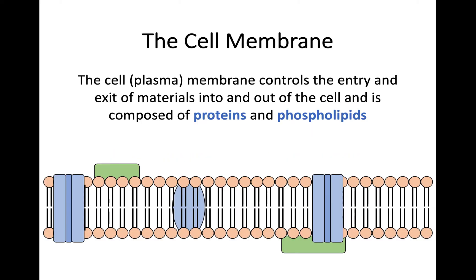So hopefully it will start with a little bit of revision for you. The cell membrane, or plasma membrane, controls the entry and exit of materials in and out of the cell, and it's composed of proteins and phospholipids. For Advanced Higher, we're going to have to go into a little bit more detail about both the membrane proteins and the phospholipids within the cell membrane.